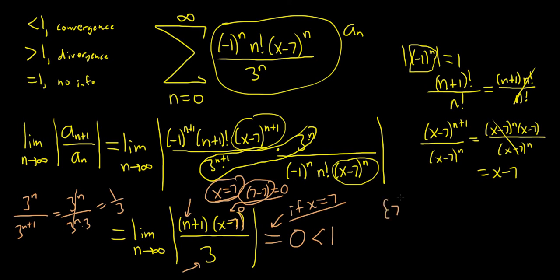So this converges only when x is 7. So this limit is equal to 0 only when x is 7. So that means that 7 is the only place that this series will converge. And that would be the interval of convergence. Even though it's a number, we still call it the interval of convergence. Notice that 7 is the center of the power series.